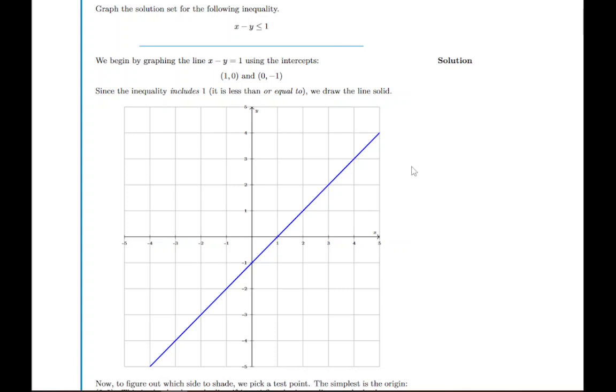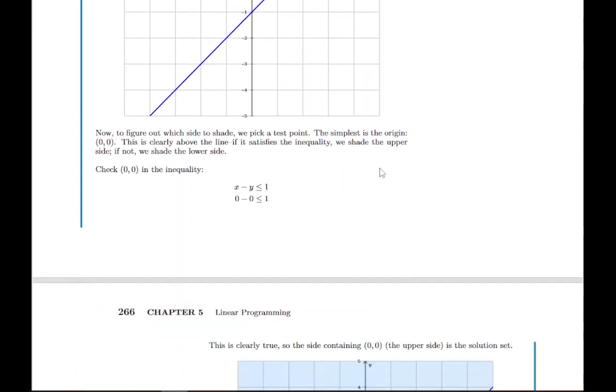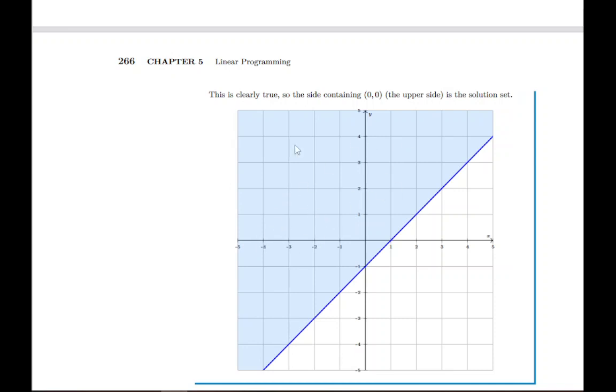The simplest thing and one that we'll generally use if we can is the point 0,0, this origin here. The only reason we wouldn't be able to use the origin is if this line happened to pass through it. If we pick this origin as the test point and we plug 0,0 into this inequality, if we get a true statement that means that 0,0 is one of the solutions and so everything on that side would be shaded in. If we plug in 0,0 and we get a false statement, that means that is not a solution so it's the other side that should be shaded in. In this case if you plug in 0,0 you get a true statement because 0 minus 0 is less than or equal to 1, so that's the side that gets shaded in on the upper left side.